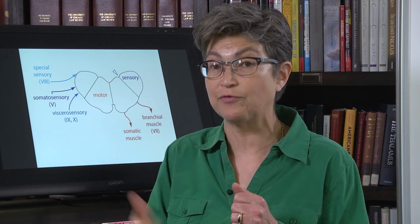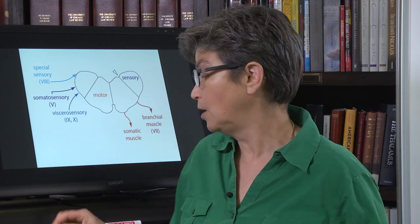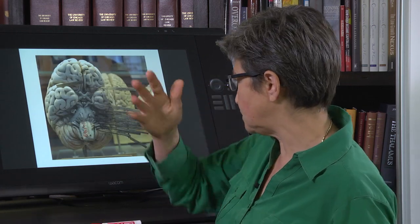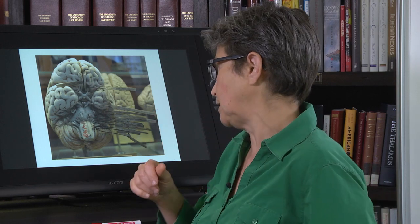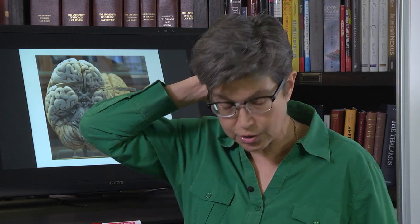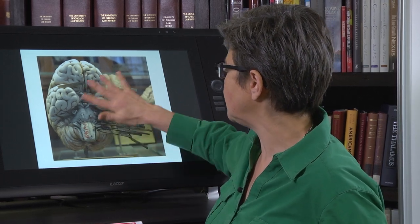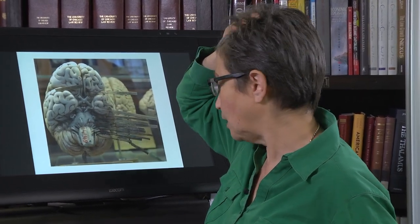Now let's find the exit points for every cranial nerve. This is a stylized version of the base of a brain, taken from the Museum of Comparative Anatomy and Paleontology in Paris. It's a lovely diagram — it's usually hard to find all the cranial nerves intact on a single brain specimen.